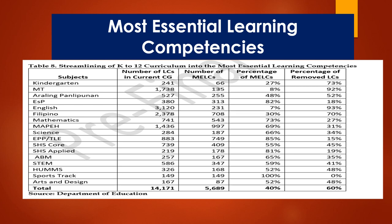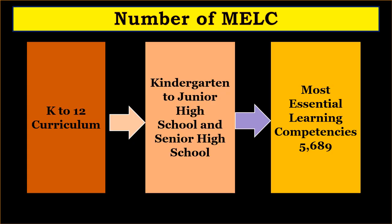Now that we have the Most Essential Learning Competencies, nagkaroon ng pag-aaral o streamlining. The number of LCs, which is 14,171 from Kinder to Senior High — with the number of MELCs added. For example, Kinder: we had 241 LCs, the number of MELCs is 66, the percentage of MELCs is 27%, and the percentage of Removed or Merged LCs is 73%. For the total overall, the percentage of MELCs is 40%, and Removed or Merged LCs is 60% of the 14,171. So the total number of MELCs is 5,689.